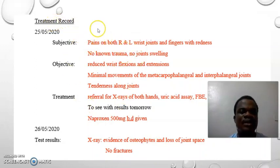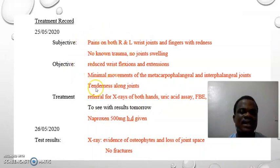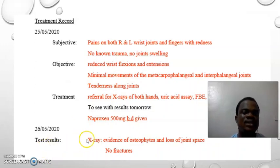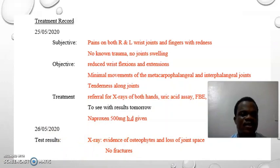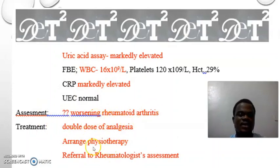The third paragraph will be the treatment record — the events that happened yesterday. I'll use symptoms as one sentence, examination as another sentence, and investigation and treatment as a third sentence. The fourth paragraph will cover today's events, using the investigation findings as one sentence, the assessment as another, and the treatment offered as a third sentence.